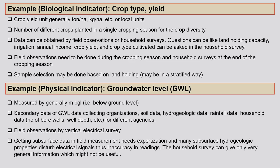For example, biological indicators include crop type and yield — studying whether crops give more or less yield under climate change conditions. Physical indicators such as groundwater level are very critical for agriculture. Groundwater level can be measured easily and used in modeling exercises to predict whether groundwater will go down or rise under pending climate change. These are various indicators to consider for vulnerability assessment.